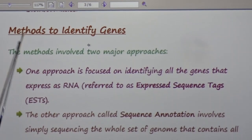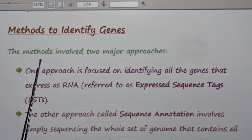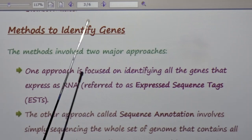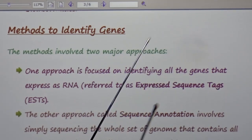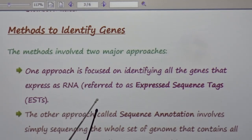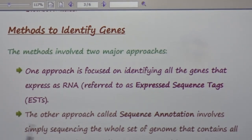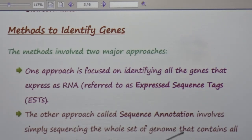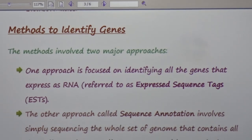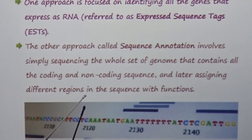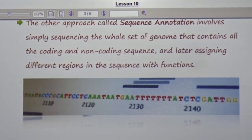Now we will discuss methods to identify genes. The method involves two major approaches. One approach is focused on identifying all the genes that express as RNA, referred to as expressed sequences. The other approach, called sequence annotation, involves simply sequencing the whole set of the genome containing all coding and non-coding sequences, and later assigning different regions in the sequence with a function.